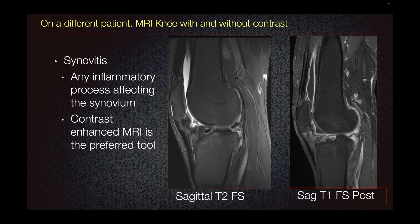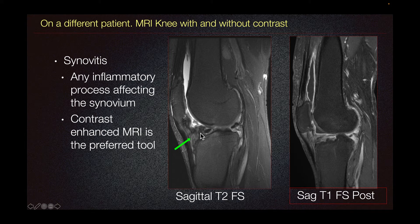On a different patient, this is an MRI knee with and without contrast. Synovitis is any inflammatory process that affects the synovium — it could be from the joint, tendon sheath, or bursa. Contrast-enhanced MRI is the preferred tool. When we evaluate for synovitis, we look at the Hoffa's fat pad. In this patient, we have some edema signal in the Hoffa's fat pad, which has been associated with synovitis, however nonspecific. We look for a degree of joint effusion, which is large on this patient, and we try to assess for synovial thickening on this non-contrast imaging.